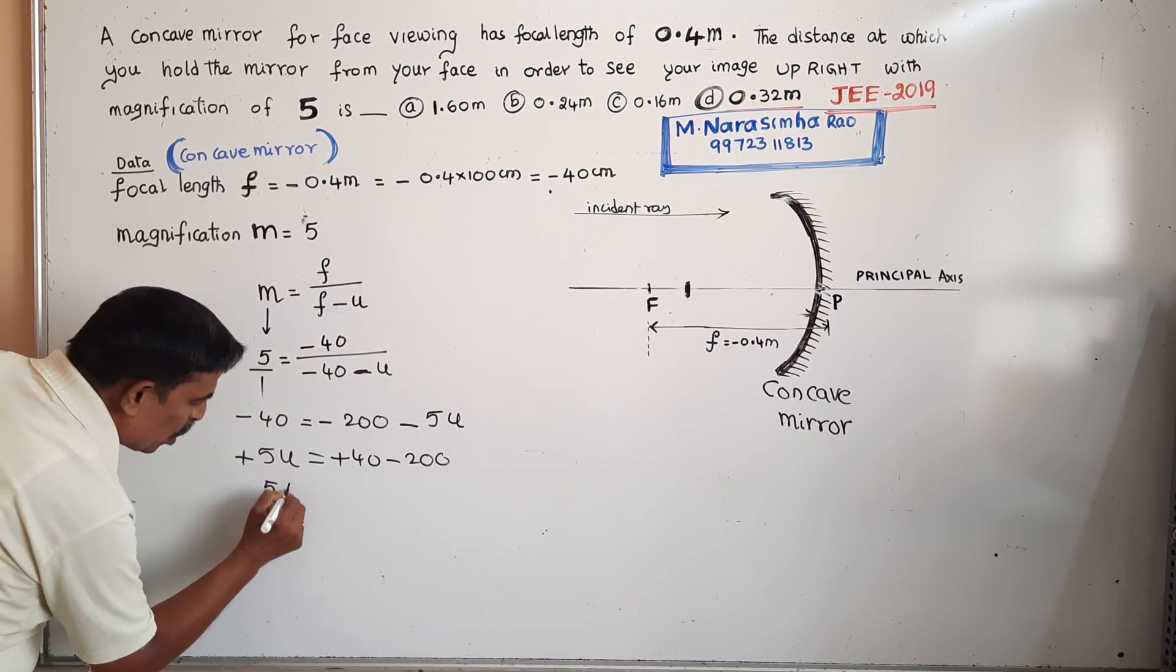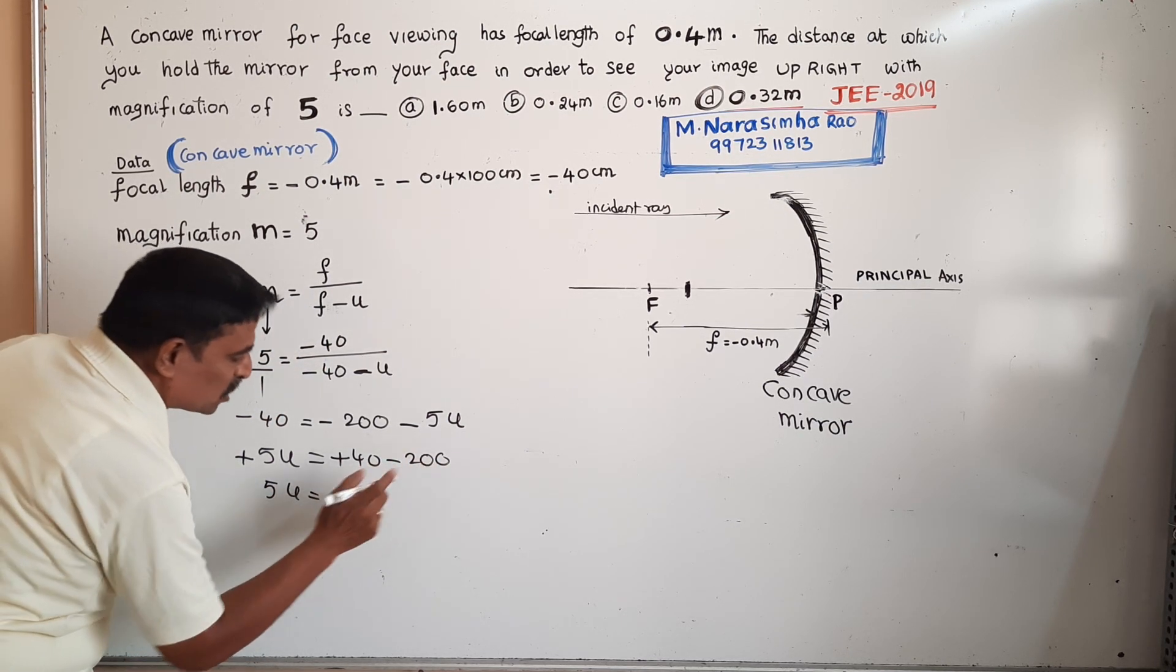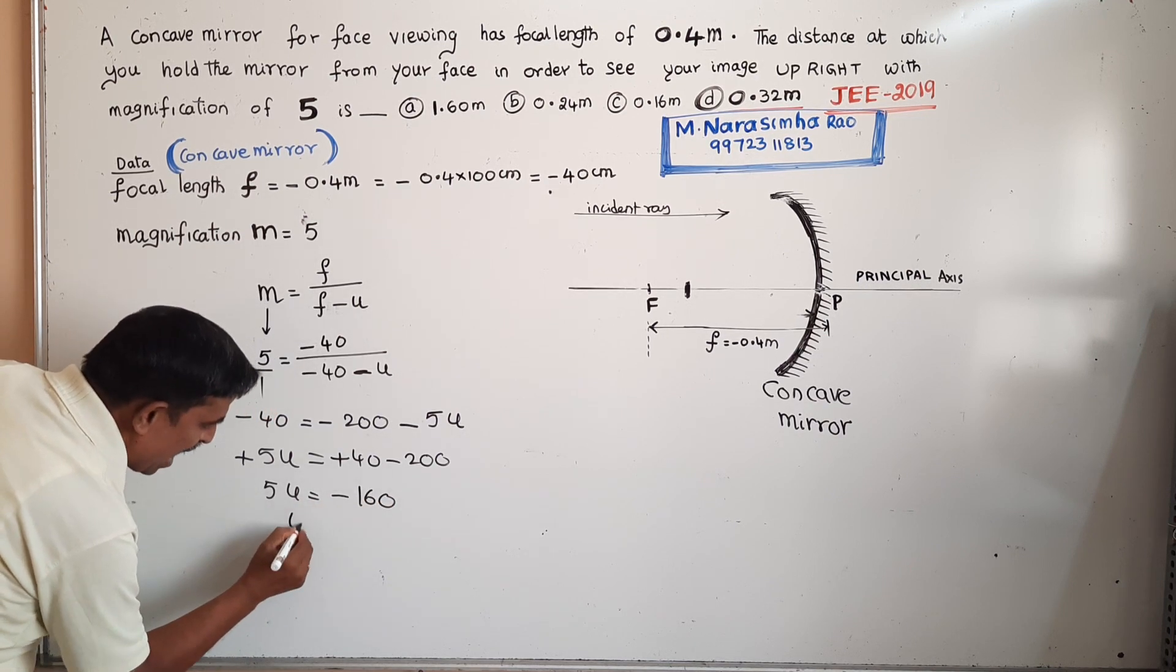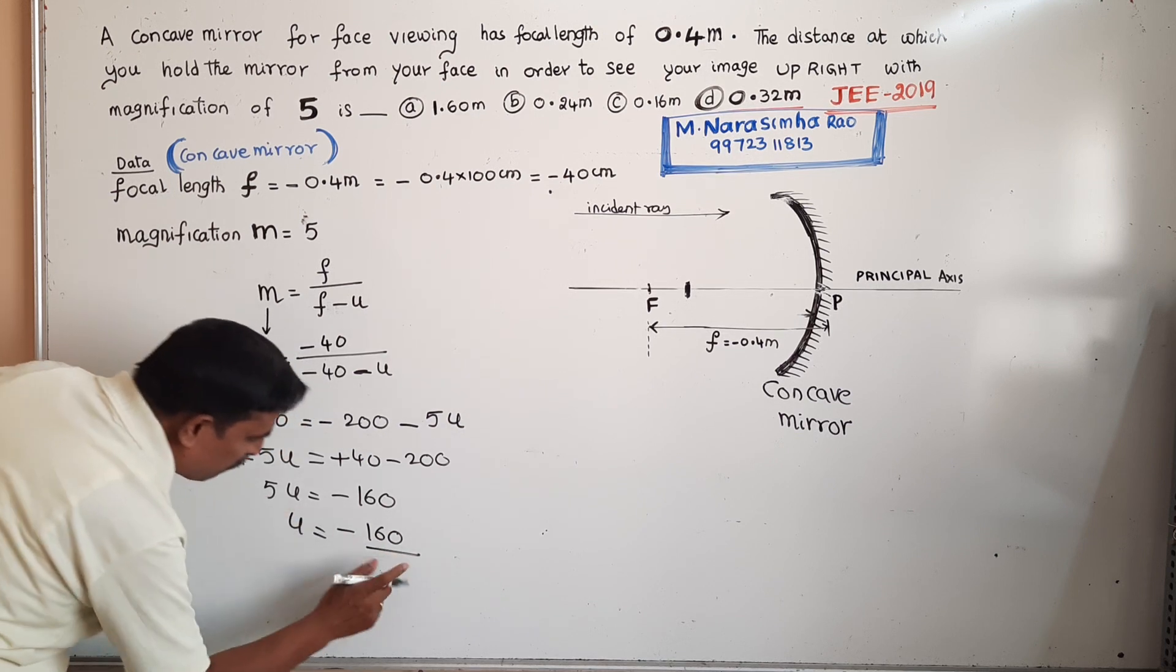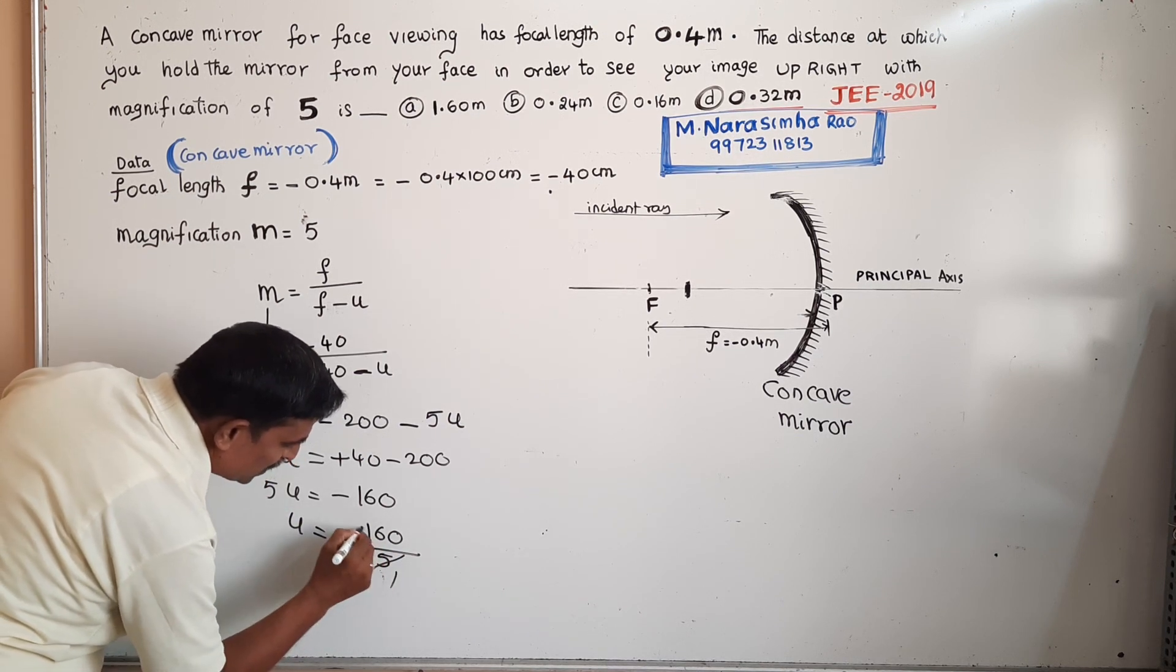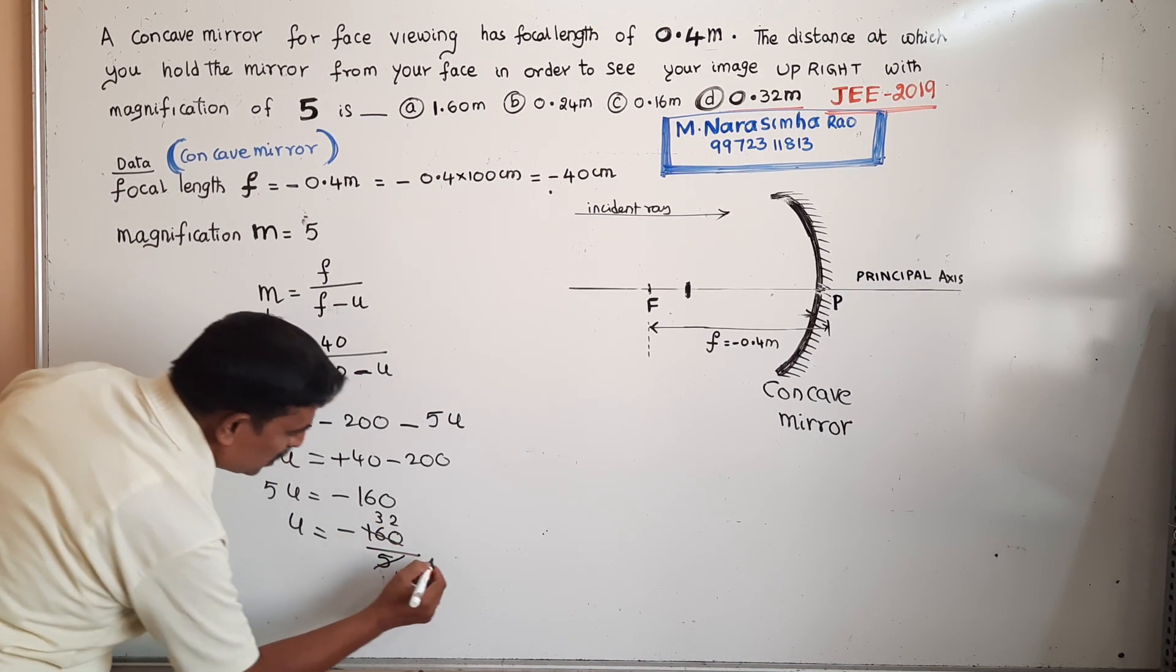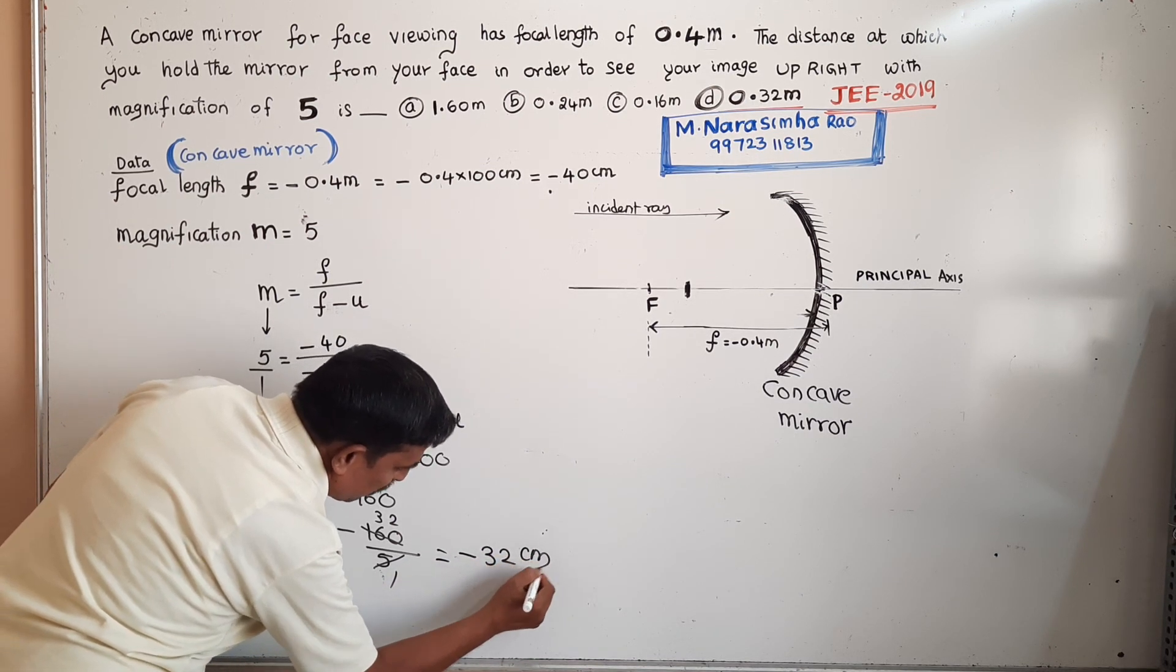5u equals 40 minus 200, which is minus 160. u equals minus 160 divided by 5, which is minus 32 centimeters.